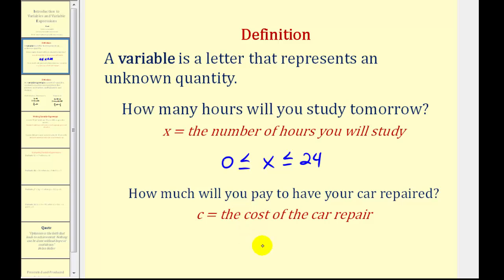And in this case, we know the cost would have to be greater than or equal to zero dollars. It could be equal to zero if the repair was under warranty. And there probably is also some maximum value for c, based upon the type of the car, but we'll go ahead and leave the restriction on the variable c as c is greater than or equal to zero dollars.